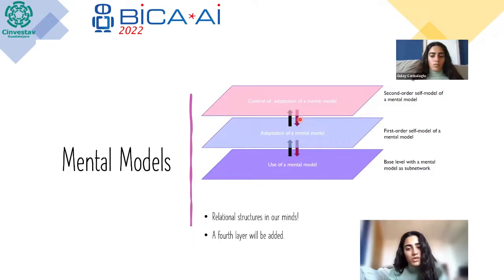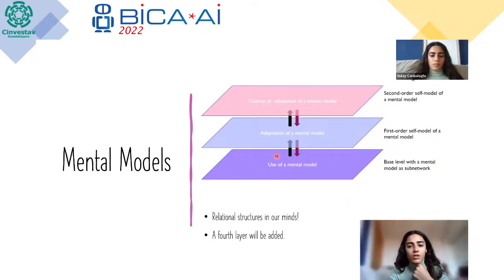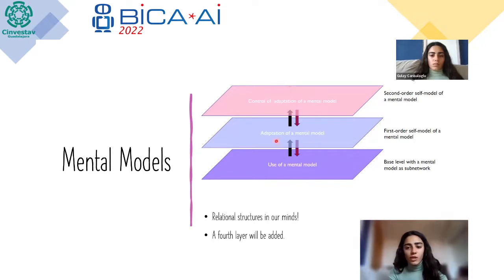For us, forgetting is as beneficial as learning — for example, for terminated relationships. At exactly this point, we need to control this adaptation, so we need a third layer for our mental models. This third layer arranges the speed and persistence of the adaptation process below. That's all to know about mental models.